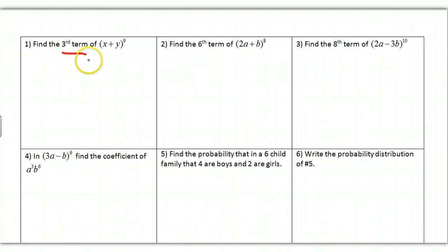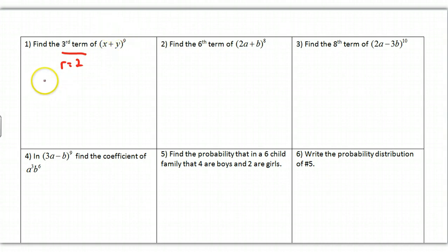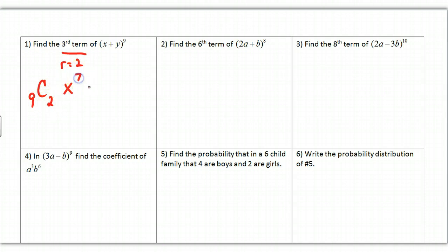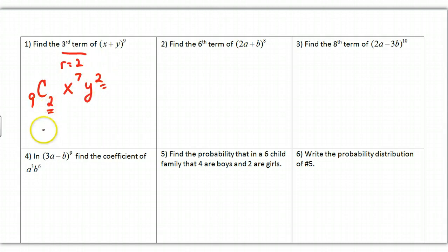To find a specific term, remember r equals the term number minus 1. For the third term of (x+y)^9, r = 2. Instead of writing out the ninth row of Pascal's triangle, use choose notation: 9C2 · x^7 · y^2. The exponents 7 and 2 must add up to 9. 9C2 = 36, so the third term is 36x⁷y².